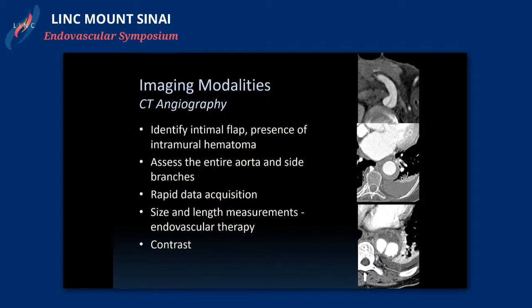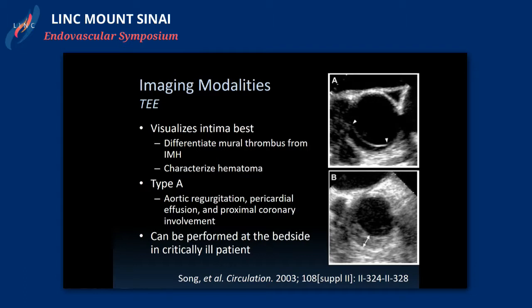CT angiography is probably what we use most today — it's quick, can identify the intimal flap, presence of intramural hematoma, assess the entire aorta and side branches, and provides rapid data acquisition and size measurements for endovascular therapy. However, the best modality, if we could get it on everyone, would be transesophageal echo. It really visualizes the whole aortic segment best, can visualize the intima very well, and differentiate mural thrombus from intramural hematoma — often the most challenging part of this diagnosis.